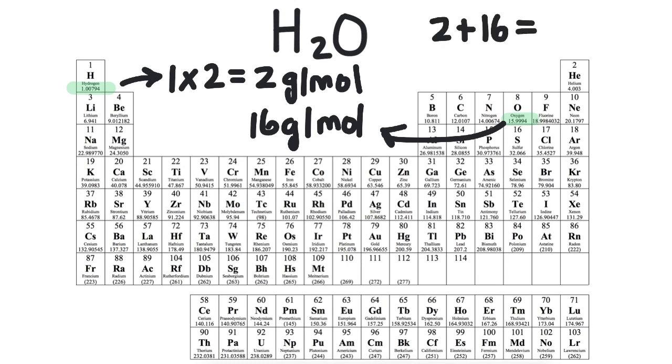So we'll have two grams per mole from the hydrogen and add that to 16 and we get a molar mass of water that's equal to 18 grams per mole.